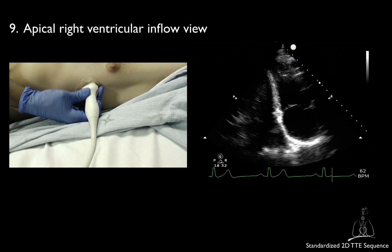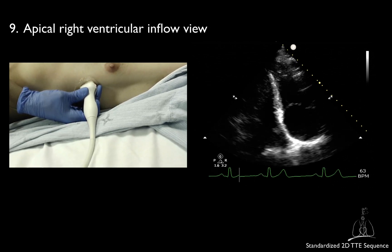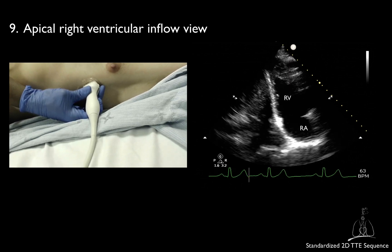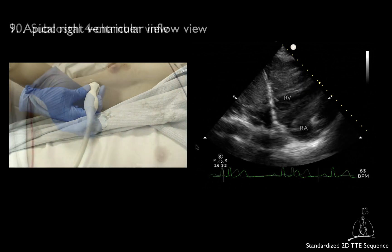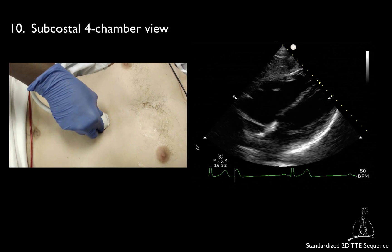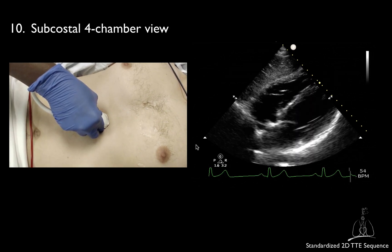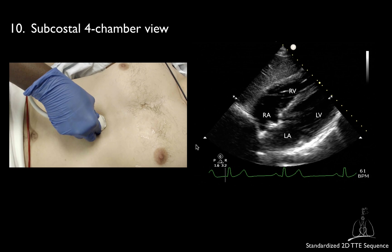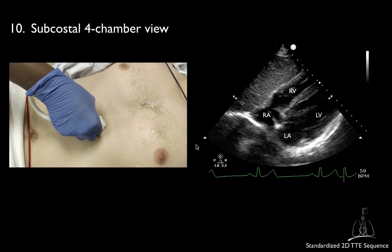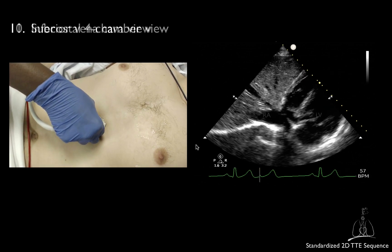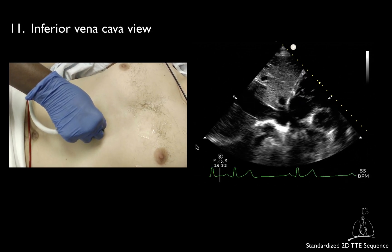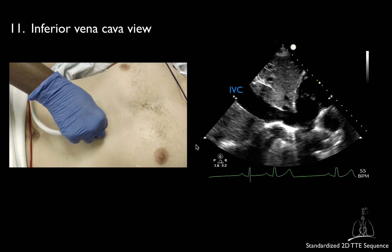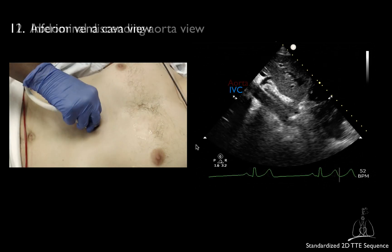From this view, you may also obtain the apical right ventricular inflow view. When moving to the subcostal window, you will first obtain the subcostal 4 chamber view, followed by views of the inferior vena cava and the abdominal descending aorta.